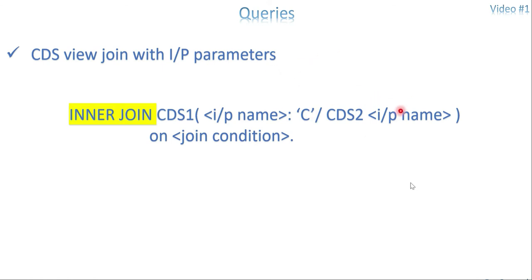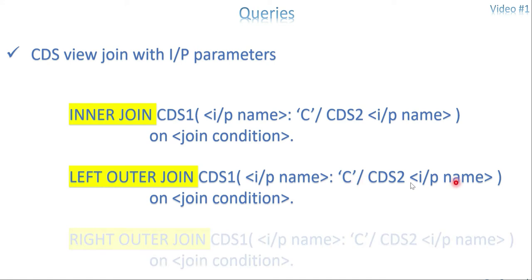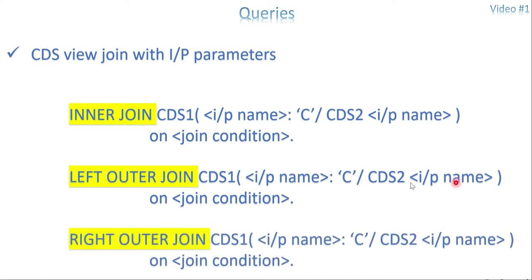You may have one more input parameter in your CDS because we have two CDS views — one is the source and one is where we are accessing the source. You can use an input parameter from that as well, either as a hardcoded value or dynamically pass the value to your CDS input parameter. Then the ON join condition is the same as normal — join condition between CDS1 and CDS2. The same format applies for LEFT OUTER JOIN as well.